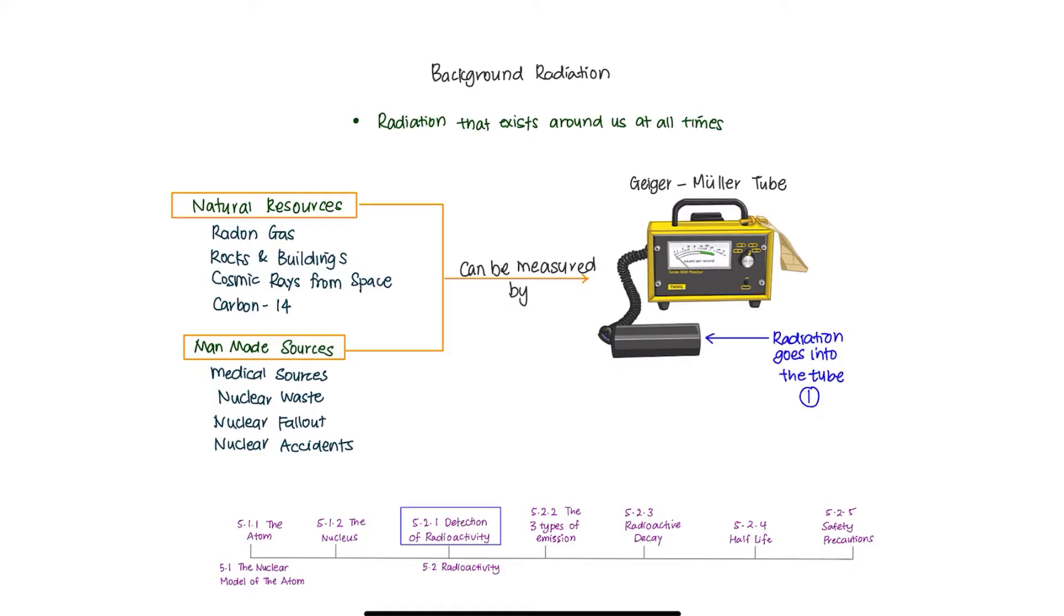So, how does it do that? Firstly, radiation goes into the tube here. When it gets into the tube, it will ionize the air inside the tube, creating sparks making click sounds.